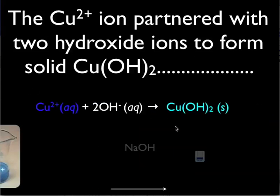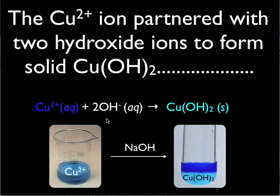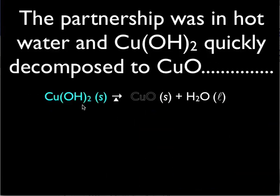Once we have a copper two sample, we can add hydroxide ions and they will combine with our copper two cation to form a solid precipitate — a bluish-green precipitate that forms at the bottom of a flask when we add sodium hydroxide to copper two ions. This is a combination reaction, a synthesis reaction, in which we take two ions — a cation and an anion — and combine them to form an insoluble precipitate: copper two hydroxide.